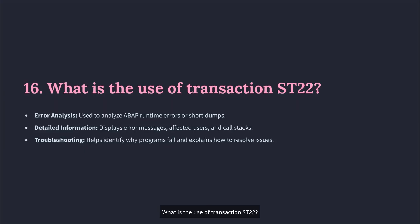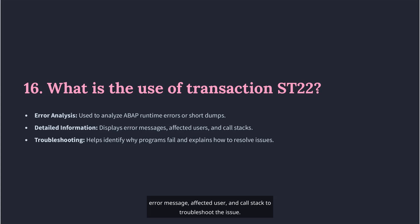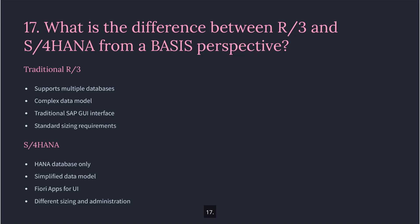Question 16: What is the use of transaction ST22? ST22 is used to analyze ABAP runtime errors or short dumps. I use it to investigate why a program failed and check details like error message, affected user, and call stack to troubleshoot the issue.